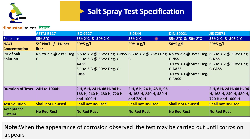In ISO 9227, DIN 50021, and JIS Z2371, if testing is done by the AASS or CASS method, the pH of the salt solution must meet the standard criteria. For the AASS method, pH of the salt solution should be 3.1 to 3.3 at a temperature of 35 plus or minus 2 degrees centigrade. For CASS, the pH of the salt solution shall be 3.1 to 3.3 at a temperature of 50 plus or minus 2 degrees centigrade.